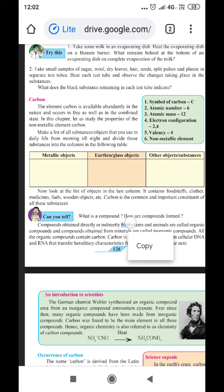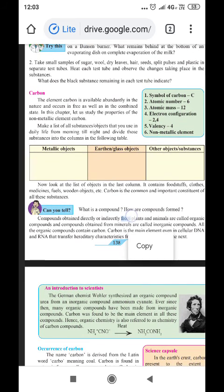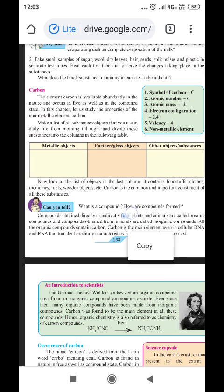Now, before we start, certain other peculiarities of the features of carbon. Symbol of carbon is capital C. Atomic number 6. Atomic mass number 12. Electronic configuration 2,4. Valency 4. It is a non-metallic element.